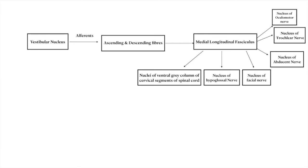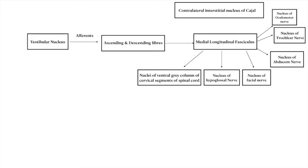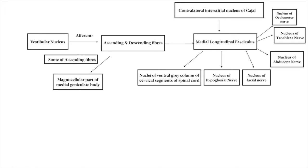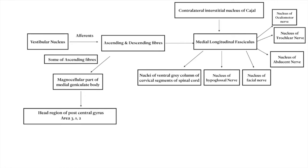Through this fasciculus the vestibular system integrates the movement of the eye, head, and neck. At the cranial end, the medial longitudinal fasciculus is supplemented by fibers from the contralateral interstitial nucleus of Cajal. Some of the ascending fibers of the medial longitudinal fasciculus are relayed into the magnocellular part of the medial geniculate body, and thereafter projected to the head regions of the postcentral gyrus, areas 3, 1, and 2.